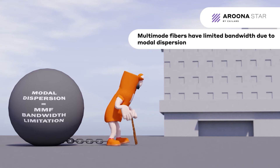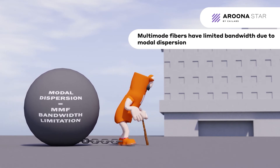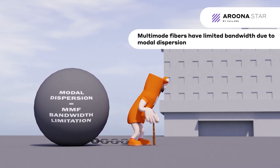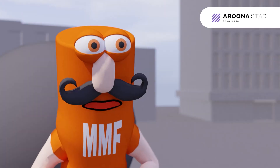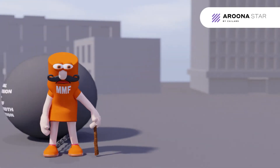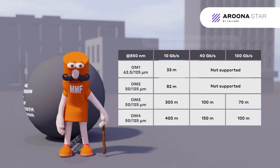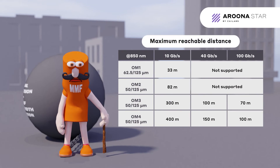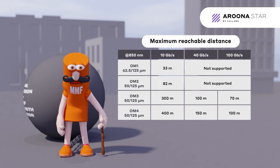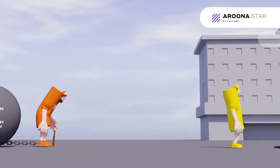Multimode fibers had sufficient capacity when they were first deployed. However, they are now reaching their bandwidth limit, making them obsolete. Modal dispersion imposes a maximum transmission distance on multimode fiber for a given data throughput. The first generations of multimode fibers are considerably impacted.